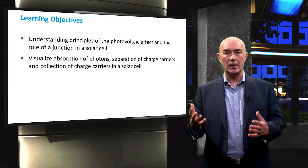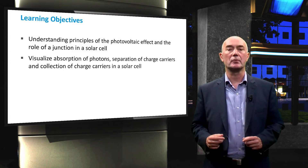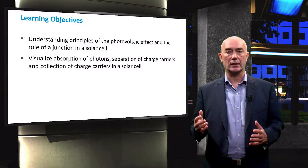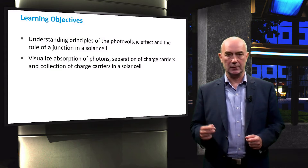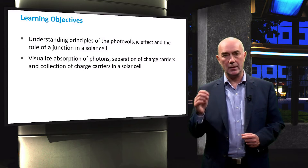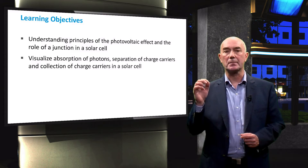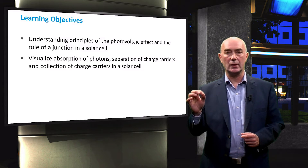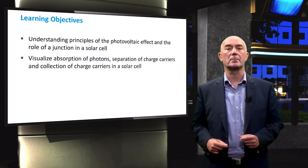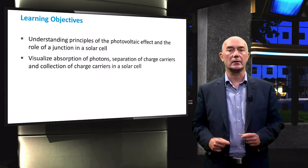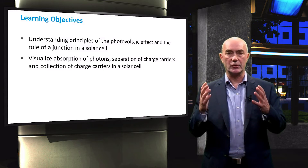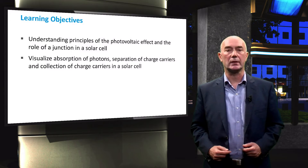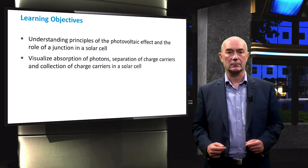This will be a recap of our video on the photovoltaic effect from earlier, but here we will explain why a junction of P-type and N-type semiconductor materials is necessary to achieve that photovoltaic effect.